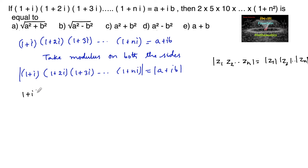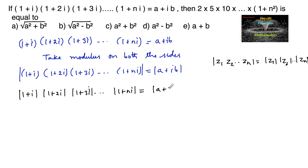|1+i|·|1+2i|·|1+3i|·...·|1+ni| = |a+ib|. And we know that the modulus of a complex number a+ib is equal to √(a²+b²).